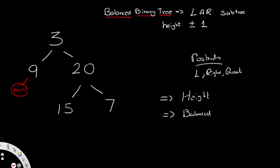The left of nine has a value of None, so we output (0, True). We also go to the right of nine, which is also None, so we output (0, True) there as well.